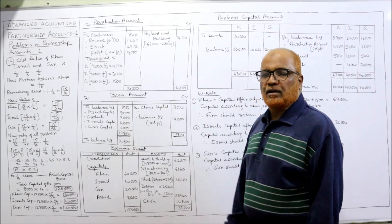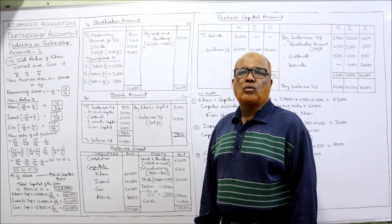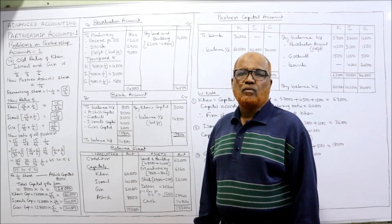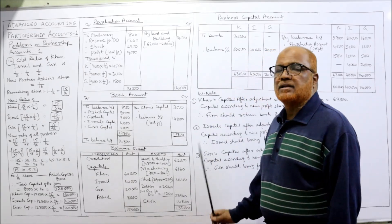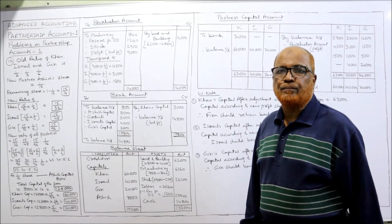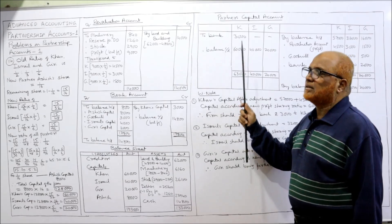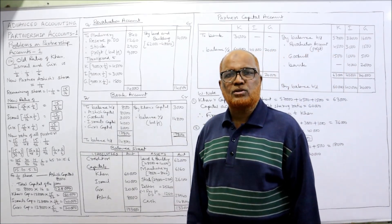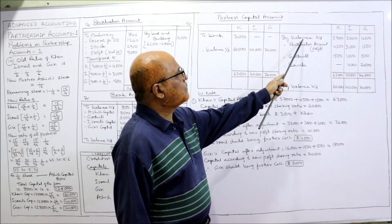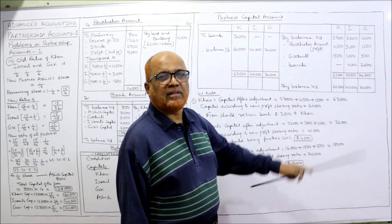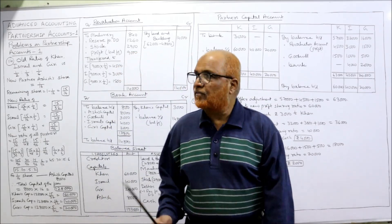Now we make the bank account and then the partners' capital account. The partners' capital account shows the opening balance brought down — Khan 57,000 — plus the share of revaluation profit for each partner, and further adjustments will follow.